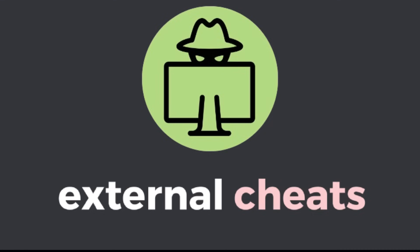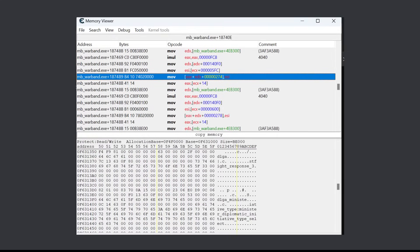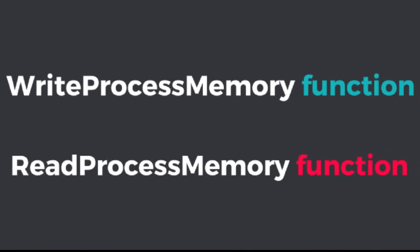The second method is external cheats. External cheats run separately from the game but still manipulate the game's memory. This method doesn't directly alter the game's process, making it less detectable. External cheats interact with the game's memory by opening a handle to the game process using Windows API functions like ReadProcessMemory and WriteProcessMemory, which allow the cheat to read from and modify the game's memory without being part of the game.